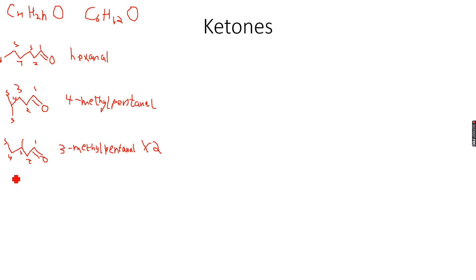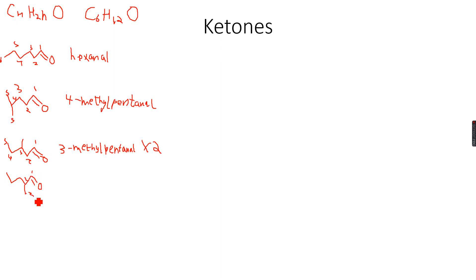We can have another structural isomer for hexanal. This time, instead of placing the methyl group on C3, I'm going to place it on C2. Numbering gives 1, 2, 3, 4, and 5, and we can see again...